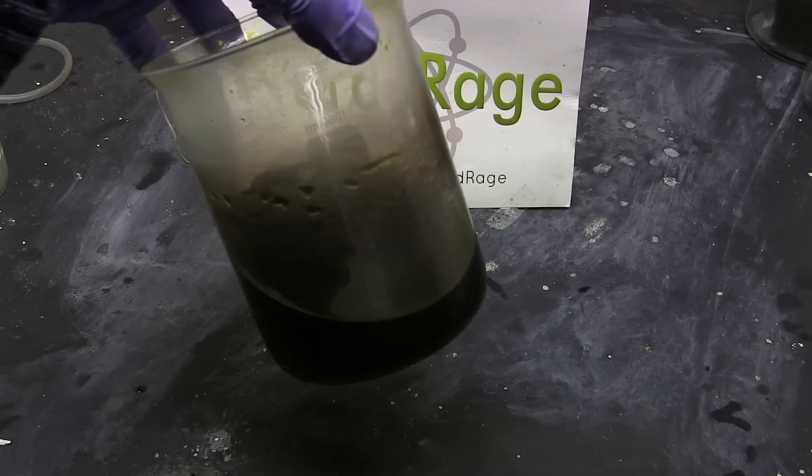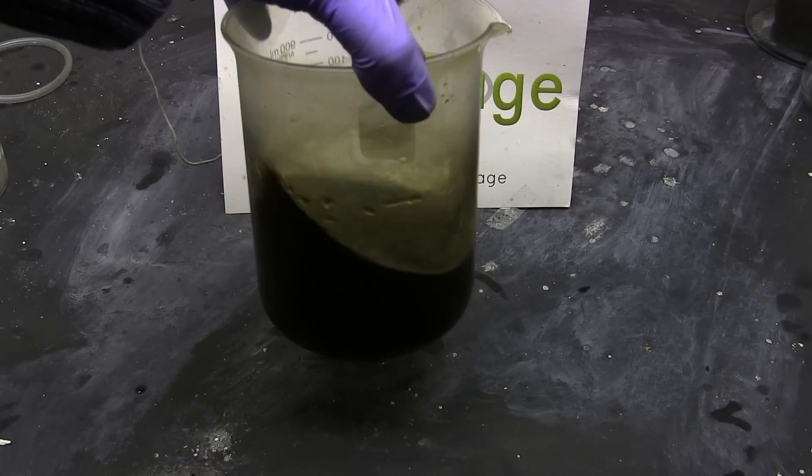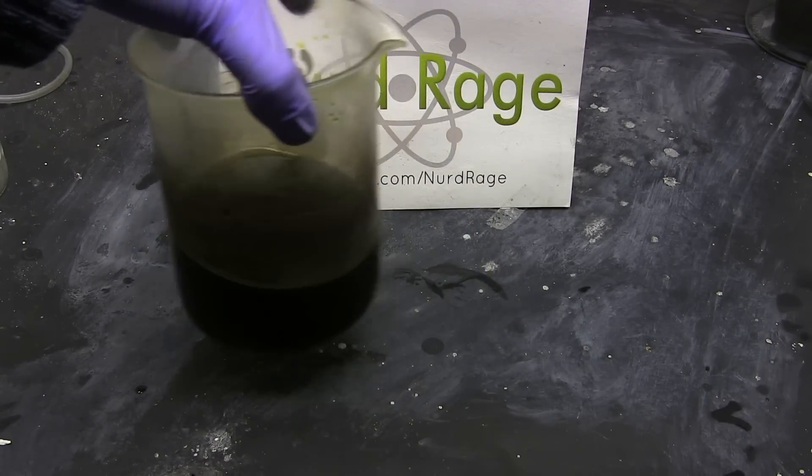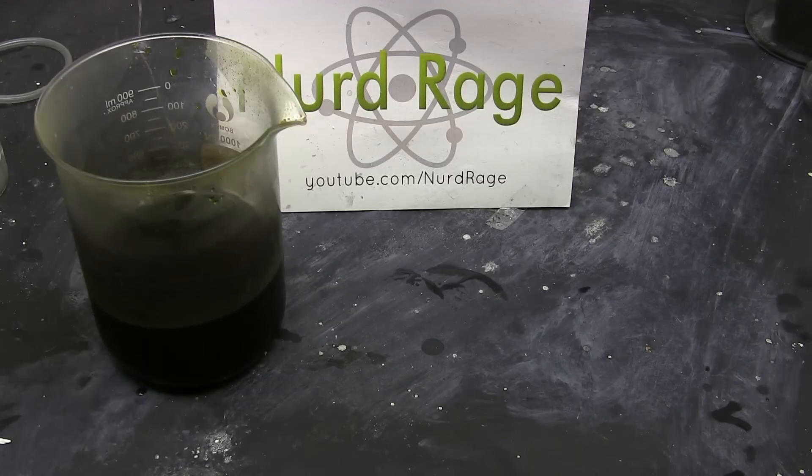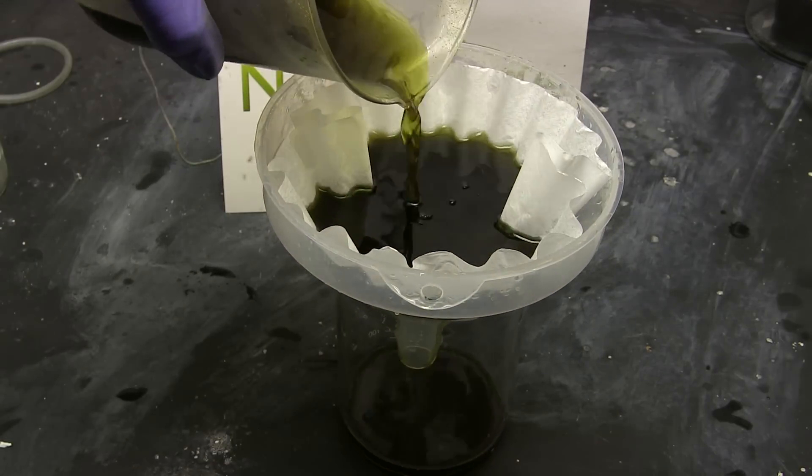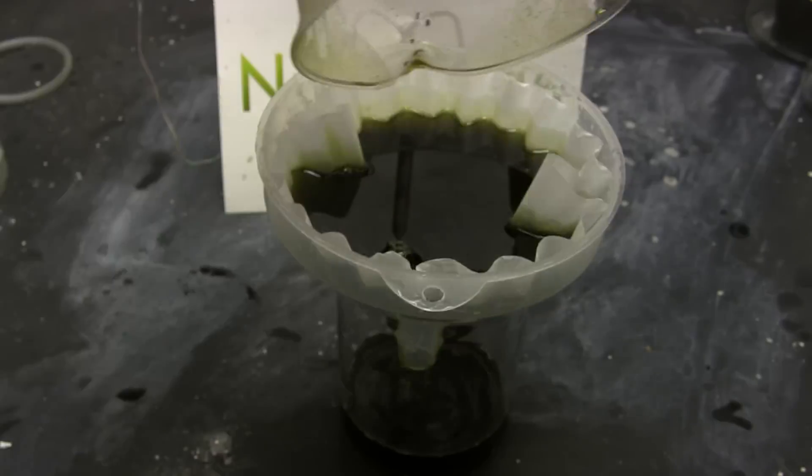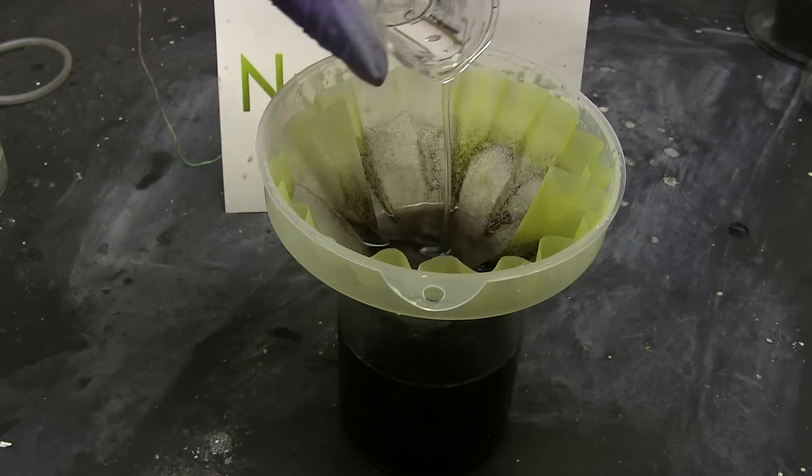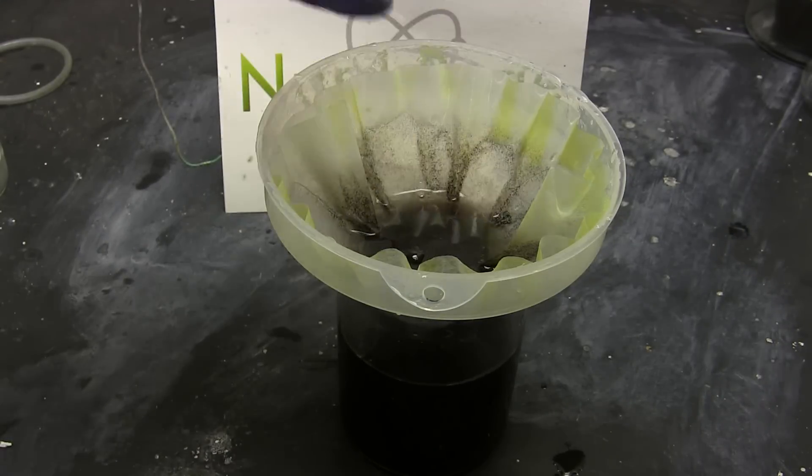So here is our spent ferric chloride etchant contaminated with copper chloride. Take note of the original volume as we'll use that as a guide for restoring it later. I have about 400mL. Now filter the solution to remove any insoluble particles like bits of circuit board dust. You can wash down the filter paper with some deionized or distilled water if you want to maximize recovery.